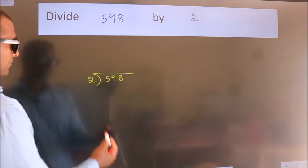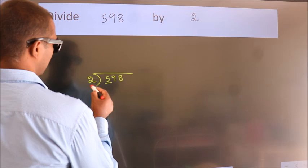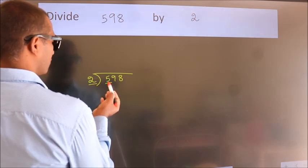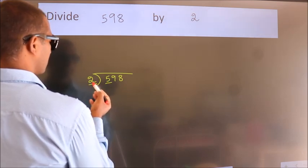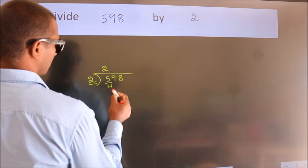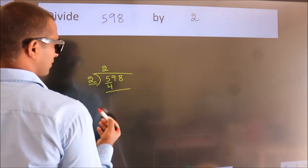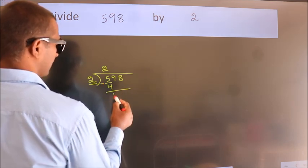Next. Here we have 5, here 2. A number close to 5 in 2 table is 2 2s, 4. Now, we should subtract. We get 1.